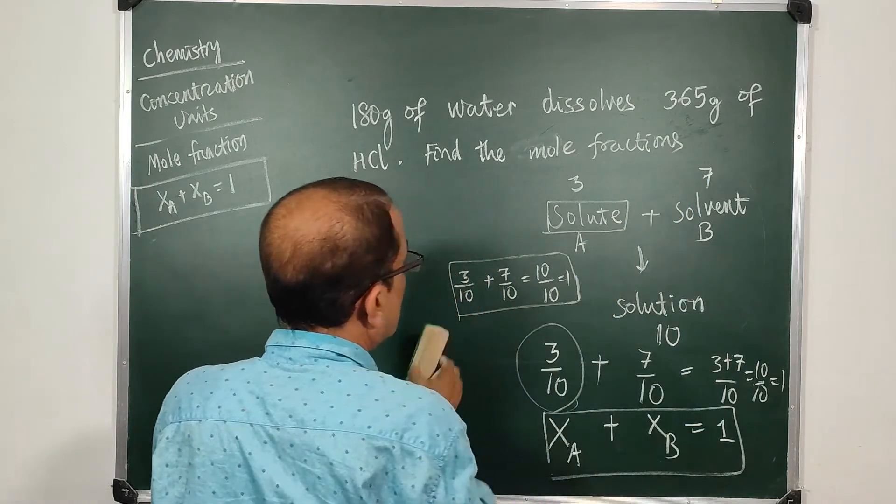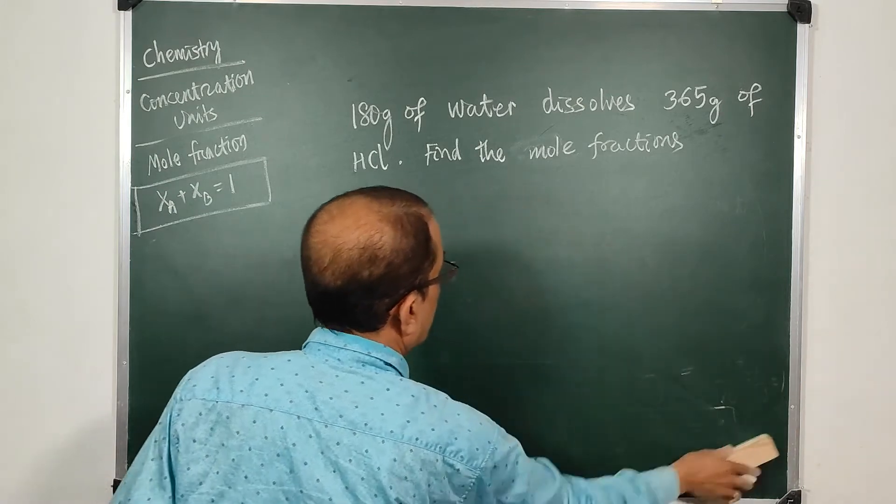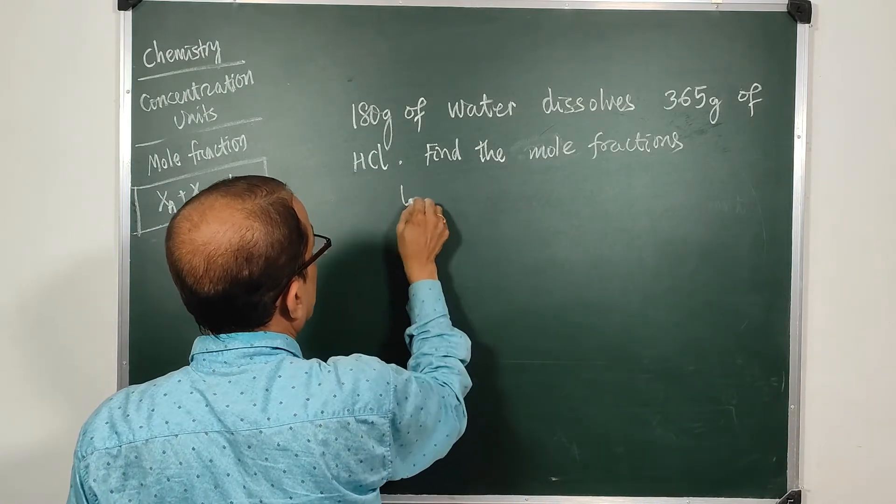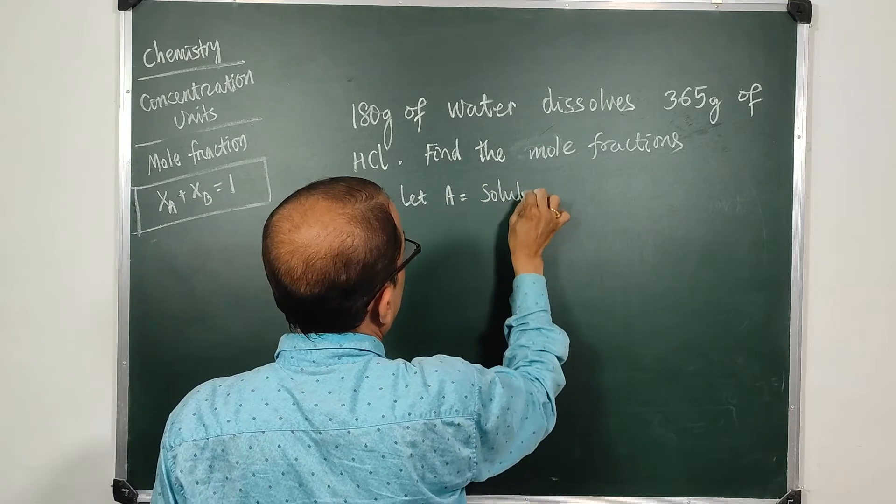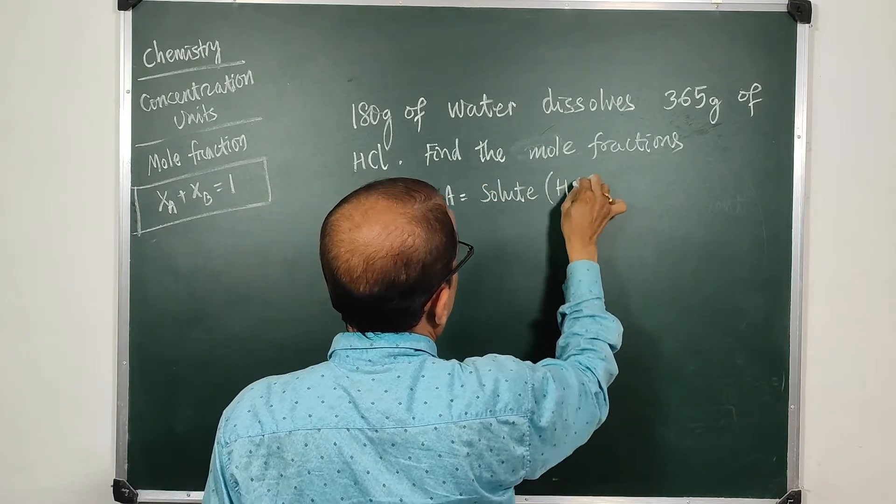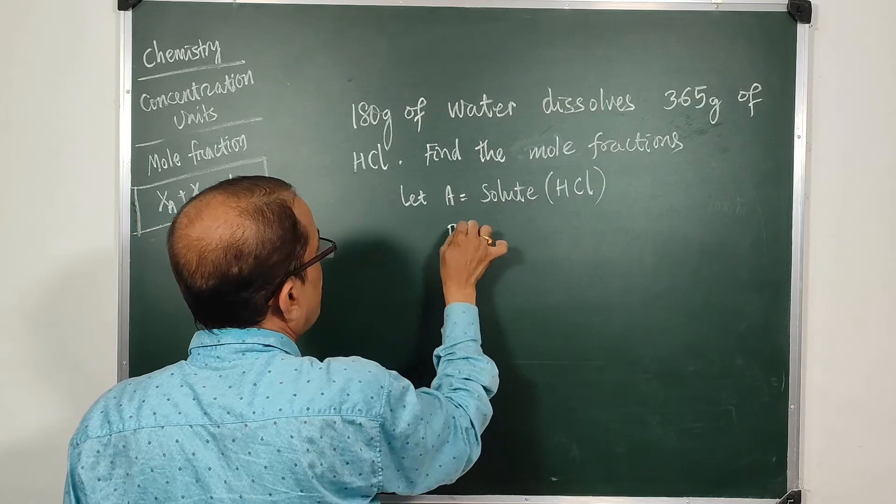So first we take a graphical thing. Graphically, say let A is the solute, here it is HCl. B be the solvent, here water.